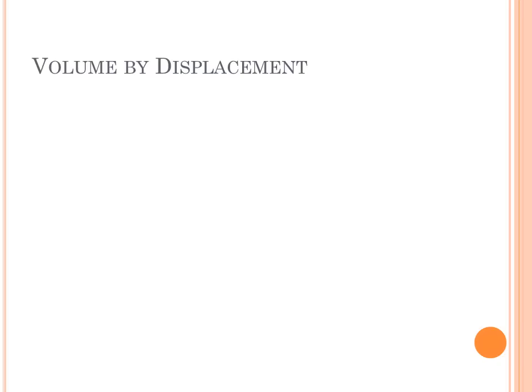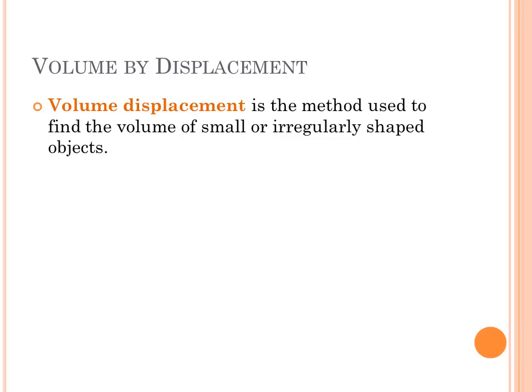Now one way of getting at volume if it's not a regularly shaped solid or a liquid that's conveniently measured in a graduated cylinder, is to measure its volume by displacement of water in a graduated cylinder. Volume by displacement.